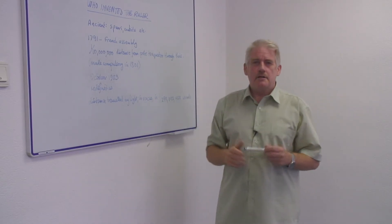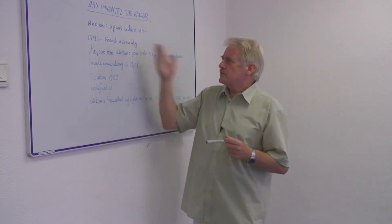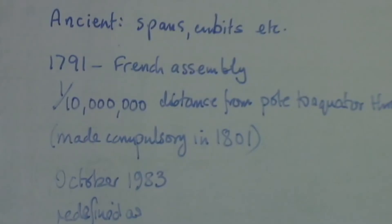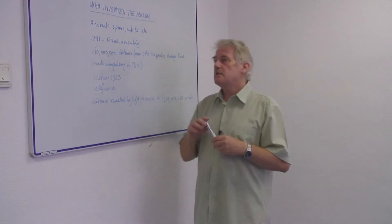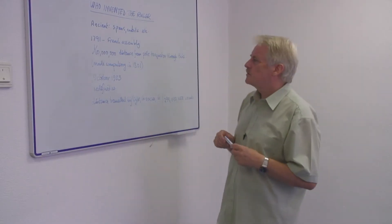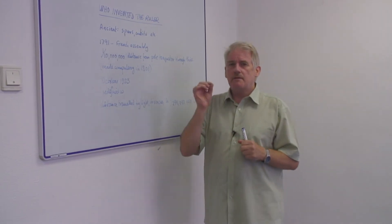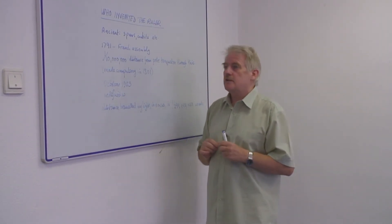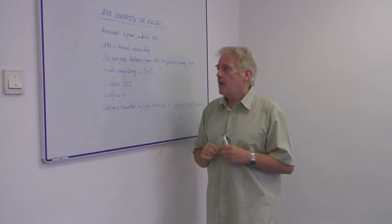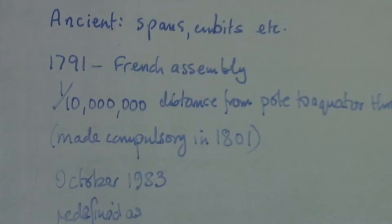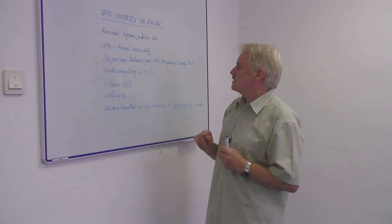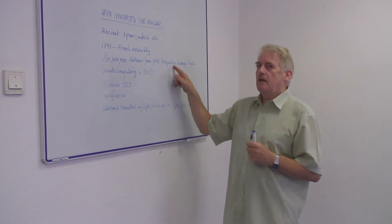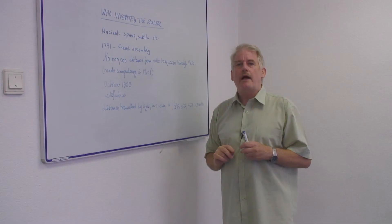So, typically, the French Assembly decided in 1791 — over 200 years ago — that they would define distance absolutely, and they called it a meter. And it was one ten-millionth of the distance from the pole to the equator on a line running through Paris.